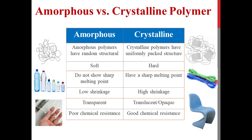In summary, amorphous polymers are those which form only an amorphous region, and crystalline polymers contain both amorphous and crystalline regions. Some polymers are inherently amorphous and some can be made amorphous by controlling processing conditions. Amorphous and crystalline polymers have very different applications because their properties are very different. Finally, the amorphous and crystalline nature of polymers can be tested by DSC. To learn more about the properties and crystalline behavior of polymers, please subscribe to our channel and watch our videos on this topic.